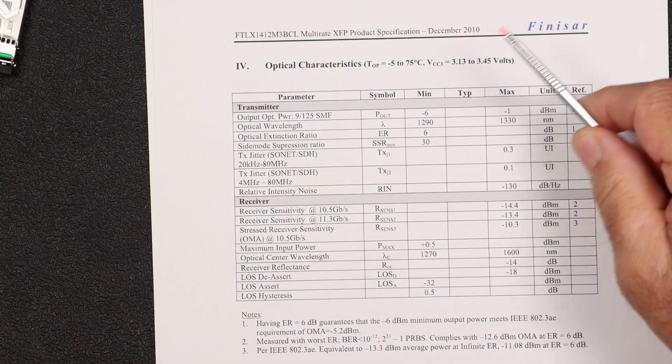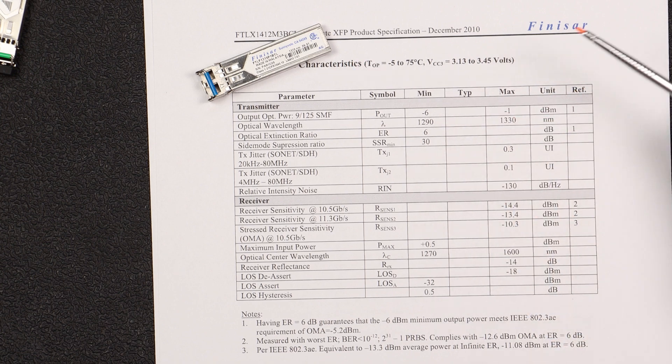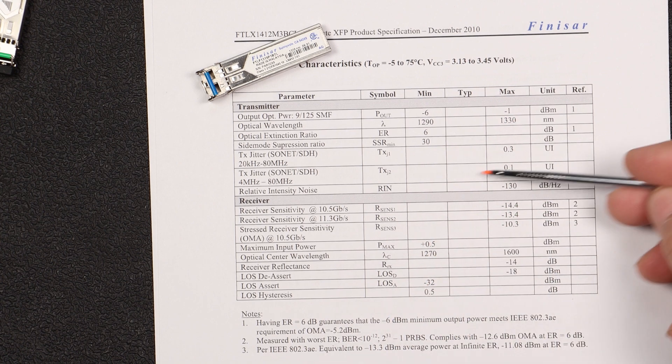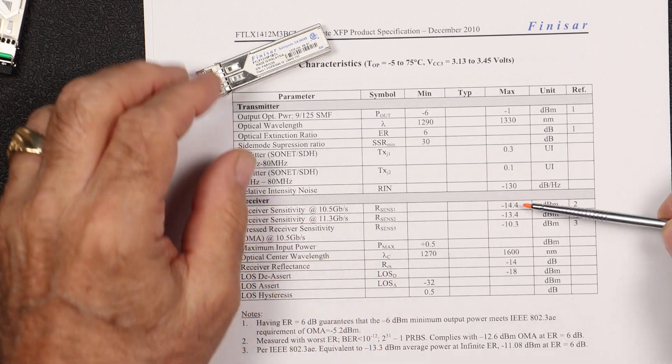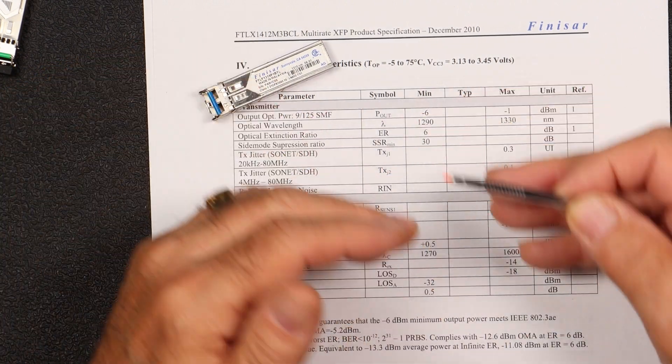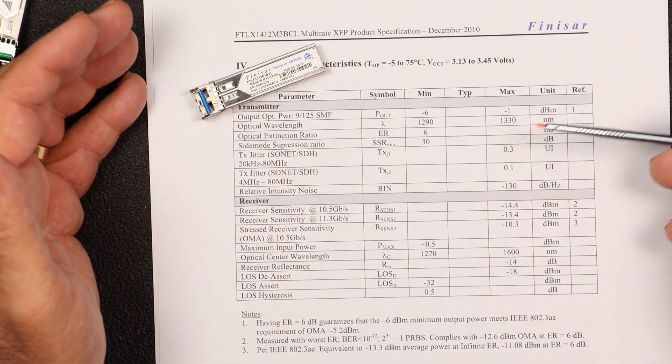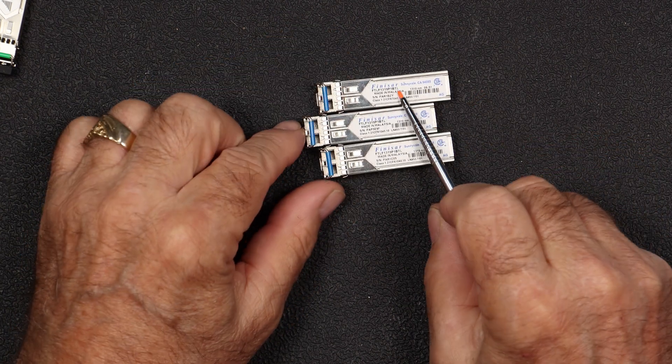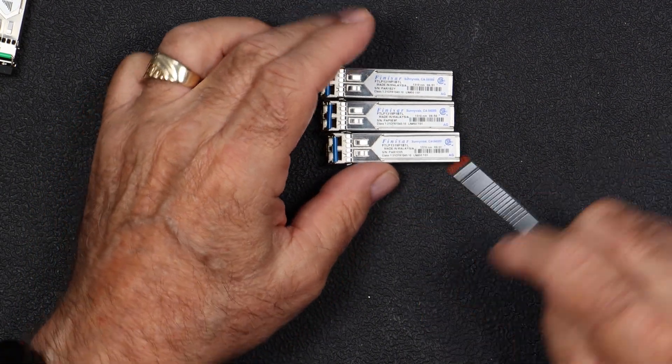So again, just to give you another example, this is the Finisar. So these are the 1310s. These guys here are rated for 10 kilometers, and so their minimum is -6 on their output power -1. And then their receiver sensitivity is -14. So you kind of go the -6 to the -14. It gives us eight, roughly eight dB of difference there. So we want to be in that's the area we're working with. That's our power budget. So we want to be somewhere between the -6 and the -14. So let's call it a -10. If you don't know what the specifications are for the optics, you can just take the part number. There's a little part number on here, punch that into the old Google and it will come back and it will give you a specification sheet.